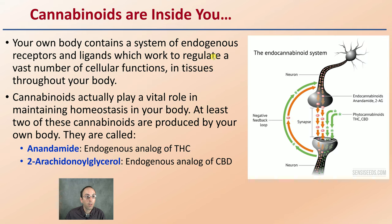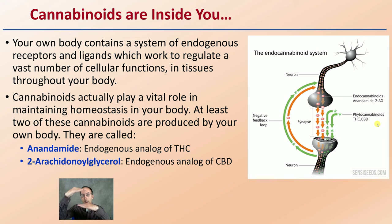Cannabinoids are inside of you. Your own body contains a system of agonist receptors and ligands, which work to regulate a vast number of cellular functions in tissues throughout your body. They play a vital role in maintaining homeostasis. We are talking about the synapse area — the region between two neurons — and this works on a negative feedback loop system.